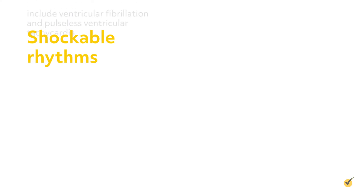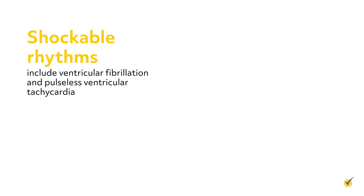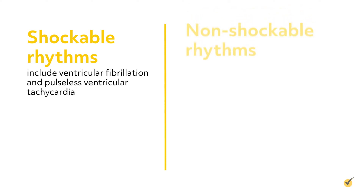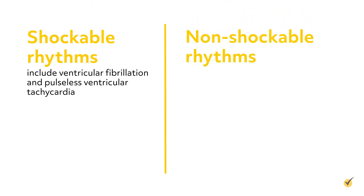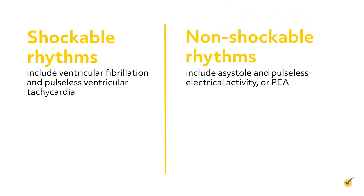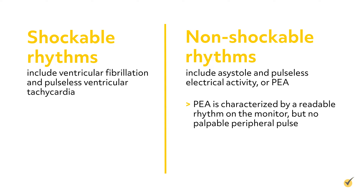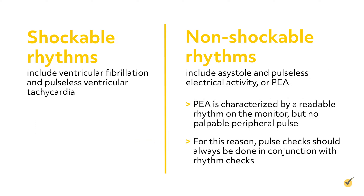Shockable rhythms include ventricular fibrillation and pulseless ventricular tachycardia. Non-shockable rhythms include asystole and pulseless electrical activity, or PEA. PEA is characterized by a readable rhythm on the monitor but no palpable peripheral pulse. For this reason, pulse checks should always be done in conjunction with rhythm checks.